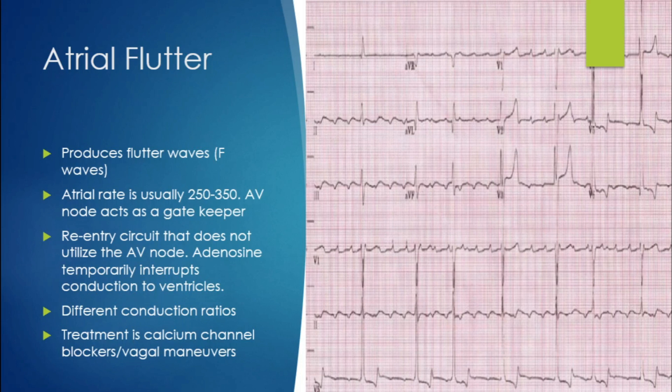If you slam these patients with adenosine, it temporarily interrupts conduction to the ventricles and slows down the rhythm so you can see the flutter waves easier, but it won't fix the flutter. Treatments for atrial flutter include vagal maneuvers, beta blockers, and calcium channel blockers. In my experience, flutter is super easy to convert — we shocked a patient with an IV one time and it scared the rhythm away. Remember that V1 is still your money lead.